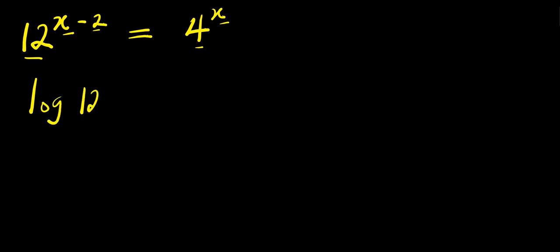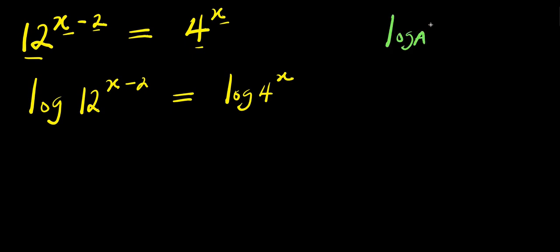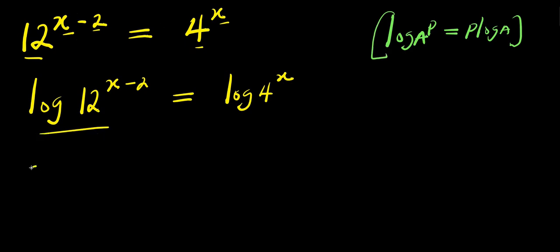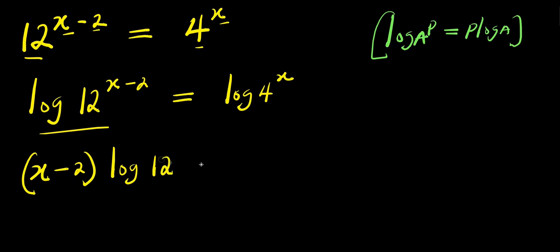We have log of 12 to the power of (x minus 2) equals log of 4 to the power of x. Remember we have the property: log a to the power b equals b times log a. So from here we have (x minus 2) times log 12 equals x times log 4.